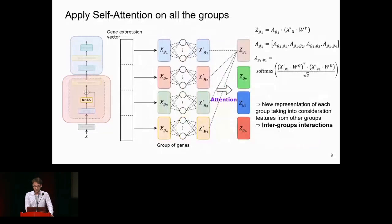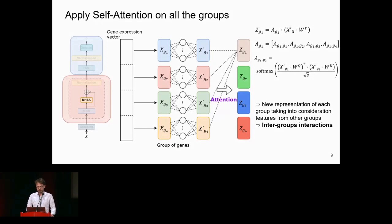To restore this information, we use the attention mechanism. For the first group, we compute attention vectors — the similarity of group one with all other groups — using a specific formula. We then apply these attention vectors to the set of groups to create a new representation of group one. Applying this to all groups gives us both intra- and inter-group interactions, yielding a rich representation for each group.